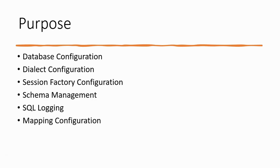The last purpose is mapping configuration. There is a mapping element which specifies the Java classes that hibernate should manage. These classes are typically annotated with hibernate annotations like @Entity. XML mapping files are quite obsolete now — most developers use annotations to define the mapping between Java objects and the database table.